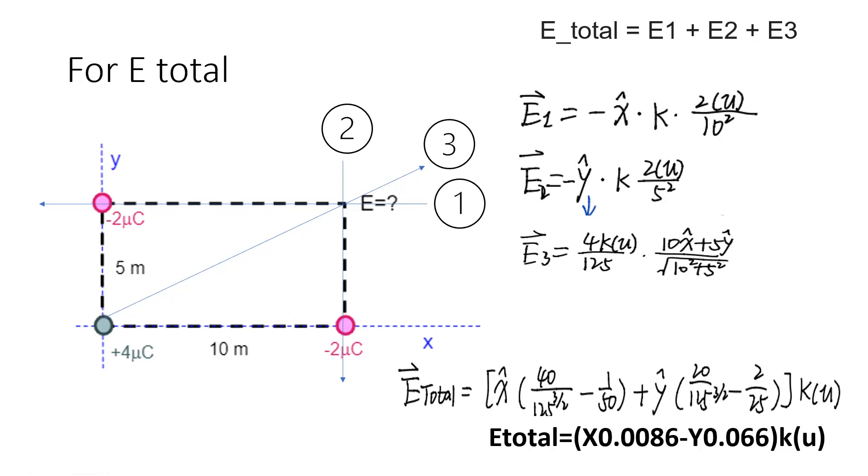E1 is negative x times K times 2µC over 10 squared. This is E1, and E3 is here for the x component. So you need to add all the x and all the y components.